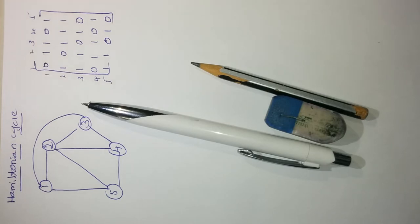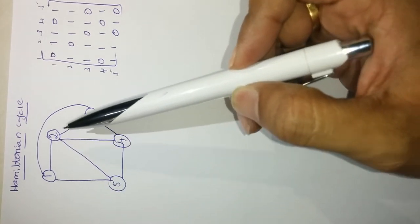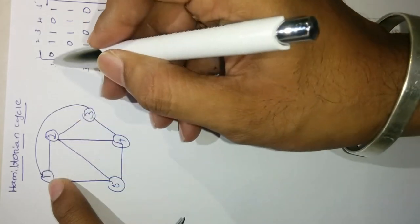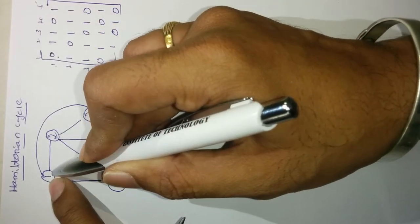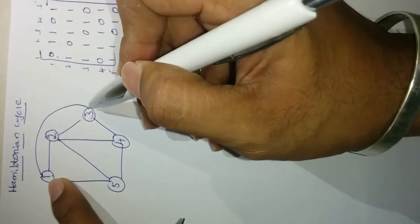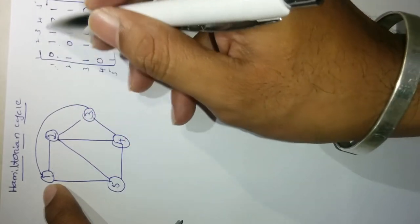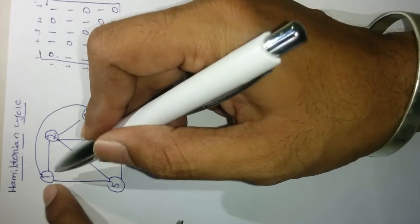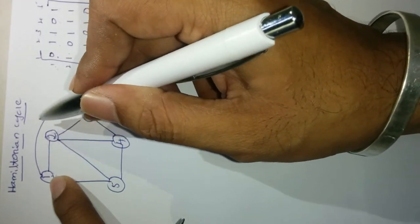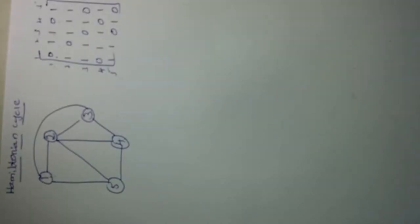First, I will take the graph of the Hamilton cycle as given, and by seeing this graph we have to draw the adjacency matrix. For edge 1 to 1 there is no self-loop, so we put 0. Edge 1 to 2: there is an edge, so we put 1. Edge 1 to 3: yes, put 1. Edge 1 to 4: no edge, put 0. Edge 1 to 5: yes, put 1. For row 2, edge 2 to 1 is there: put 1. Edge 2 to 2 self-loop: no, put 0. Similarly complete the rest of the matrix.